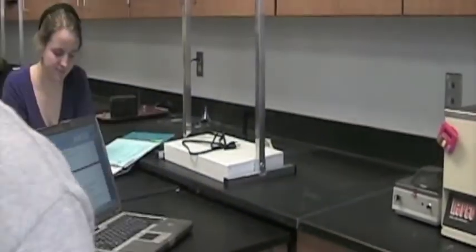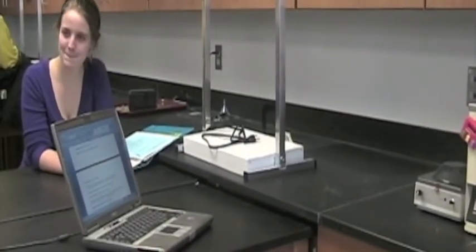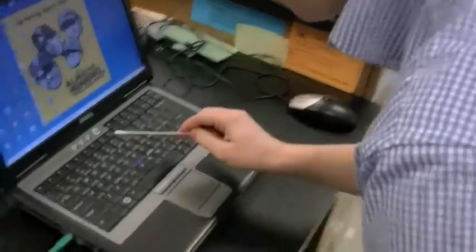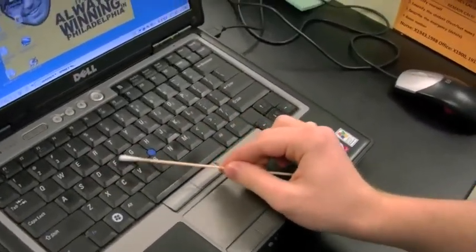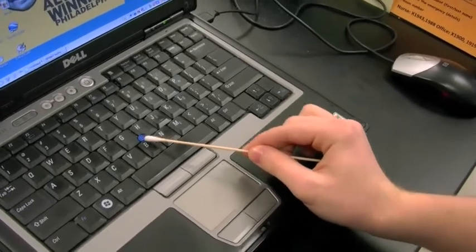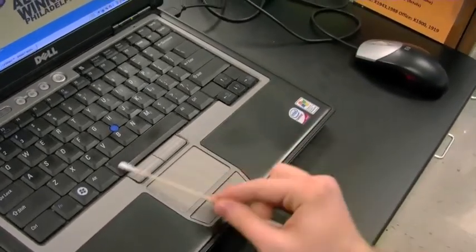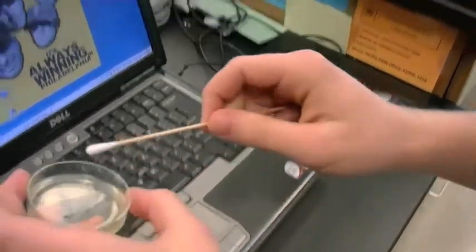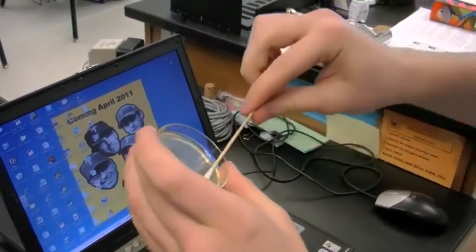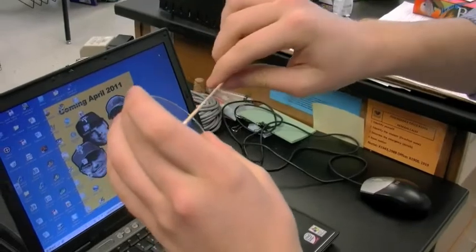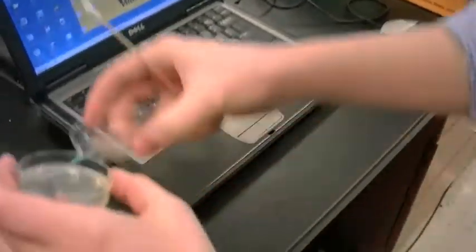To discover if bacteria was present on the computer's keyboard, we first removed a cotton swab from its container. Next, we used it to swab the surface of the keyboard. After swabbing, we returned to the laboratory and prepared an agar plate. We then gently swabbed the surface of the agar with the cotton swab. Finally, we covered the agar plate and let it sit for 24 hours. After 24 hours had passed, we returned to the lab to see if any bacteria had grown on the plate. And here is what we found.